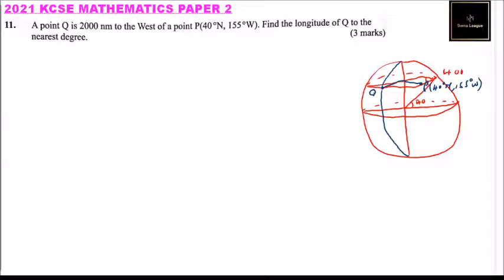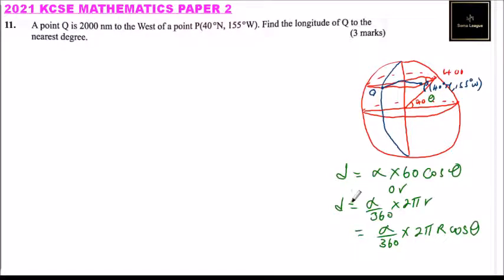So it is important to note that the distance from one place to the other on the small latitude is equals to, distance is equals to alpha multiplied by 60, the cosine of theta. Or you can say distance is equals to alpha multiplied by 2πr. But in most cases, since r will keep on changing, we say r can be replaced by alpha, that is alpha over 360 multiplied by 2πr, cosine of theta.